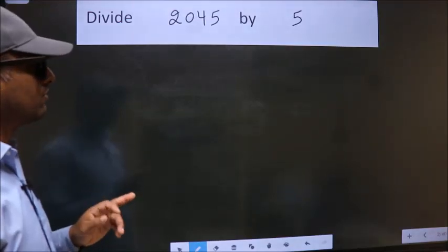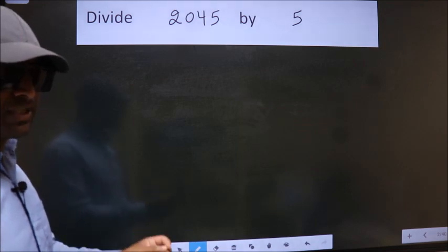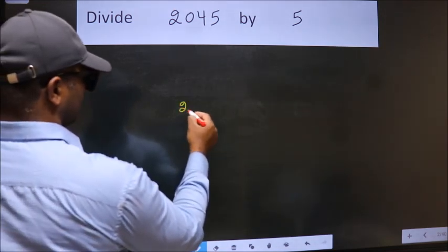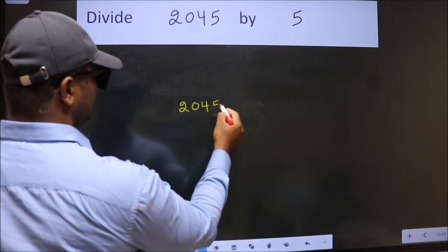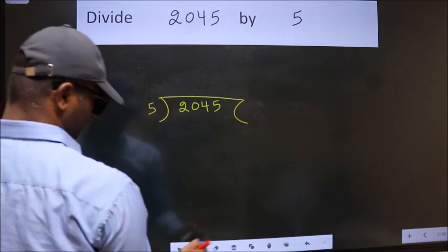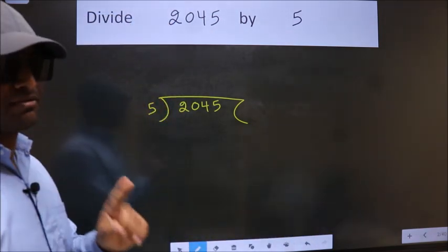Divide 2045 by 5. To do this division, we should frame it in this way: 2045 here, 5 here. This is your step 1.